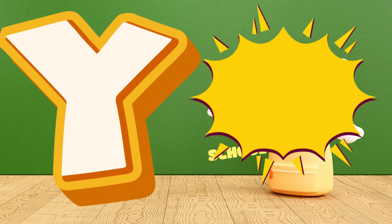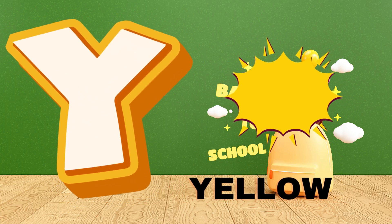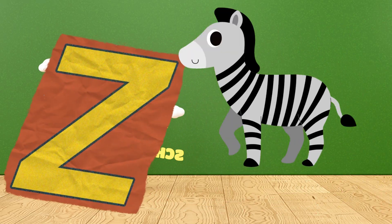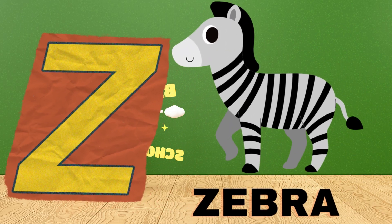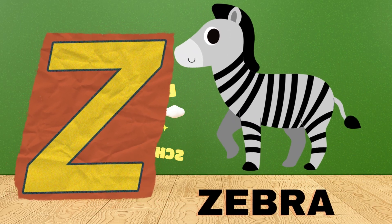Y is for yellow, y-y-yellow. Z is for zebra, z-z-zebra.